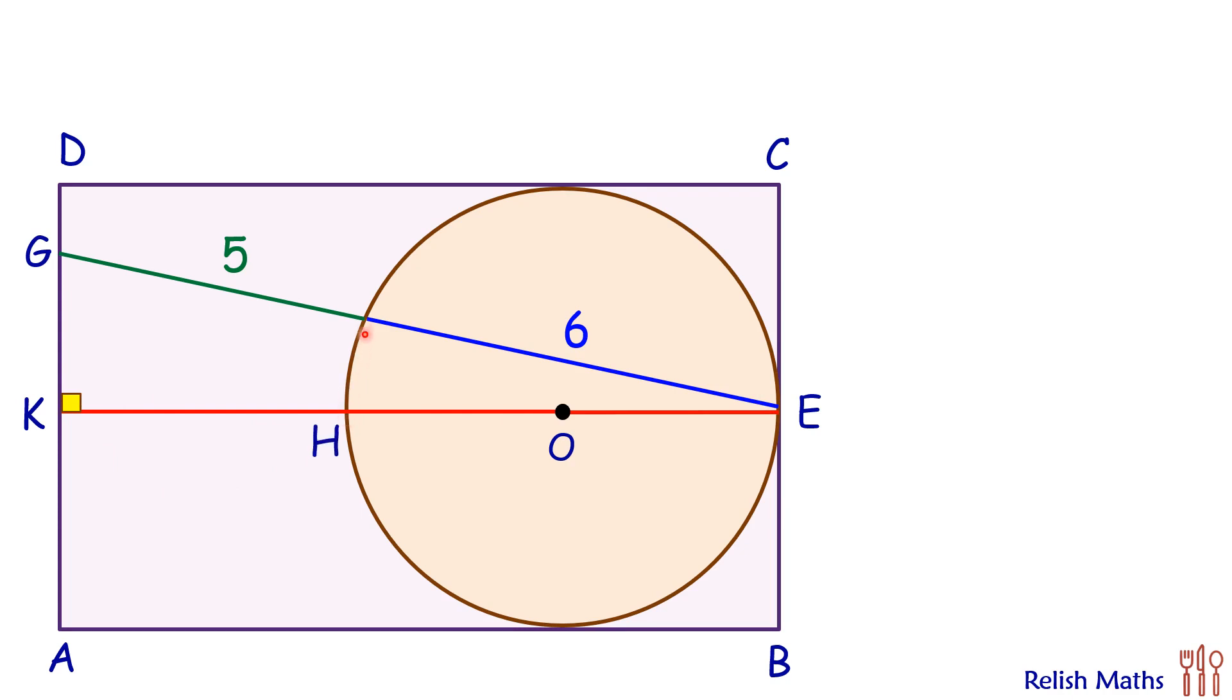From H we are joining here to this point, and let's call it F. Now, HE is the diameter of the circle, and thus angle F is 90 degrees.